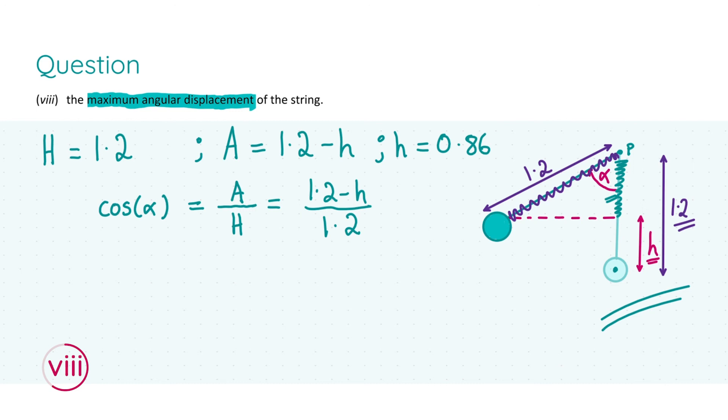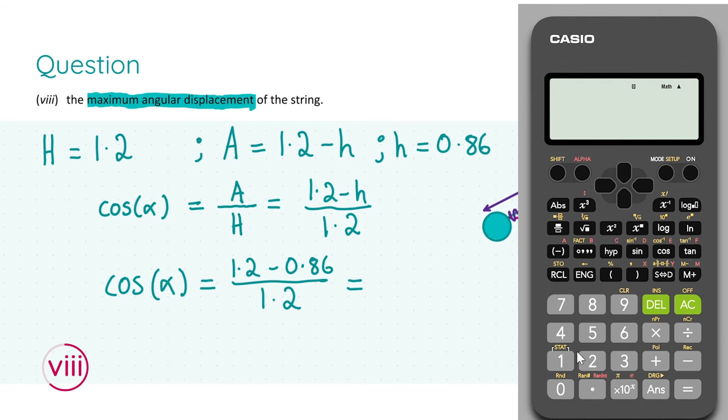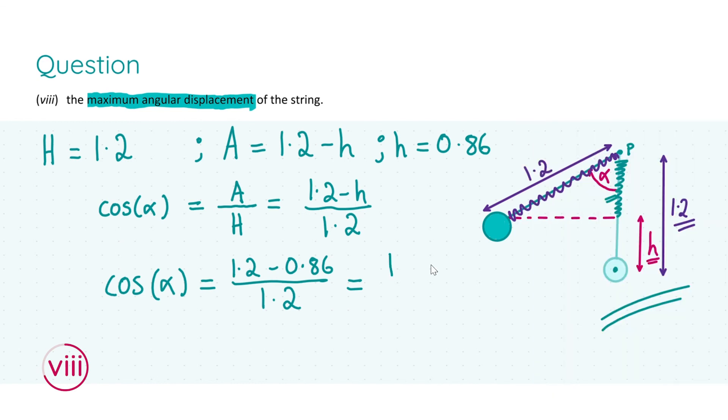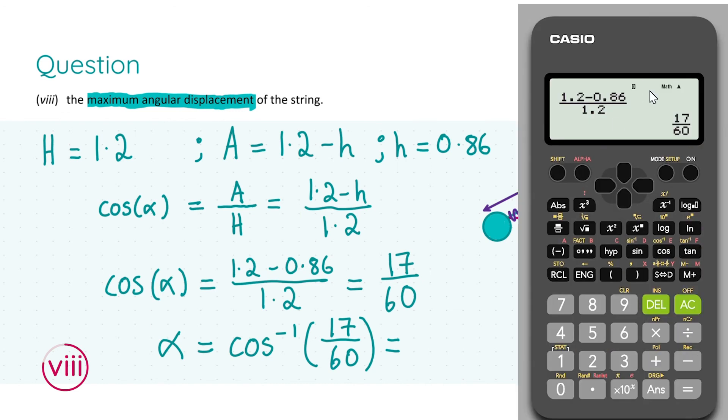Rearranging and substituting in our value for h, getting our calculator out, we have that cos(alpha) = 0.283 recurring. But as it's in fraction form, I'd always put down the full fraction value, 17/60. That's another tip—so when you get your final answer, it's the full unrounded answer. Using this, we have alpha = cos⁻¹(17/60). Remember that your calculator is in degrees or radians, but if it is in radians you need to specify that. I'd always put it in degrees for the physics exam unless it specifically states otherwise. We have our maximum angular displacement of 73.54 degrees.